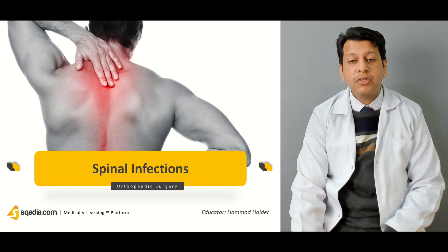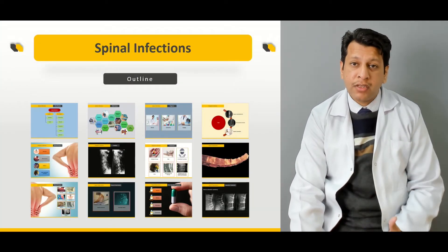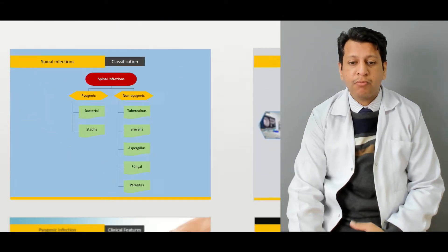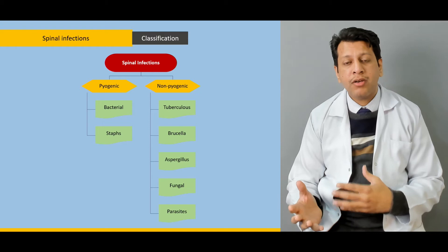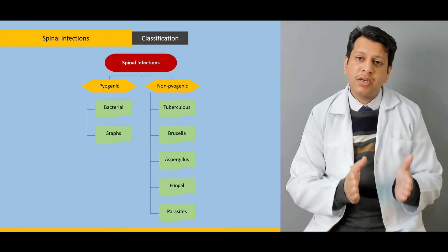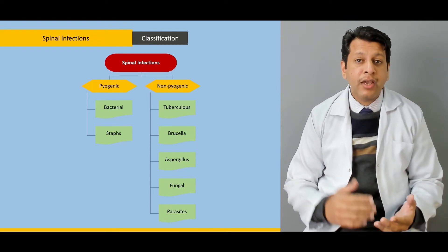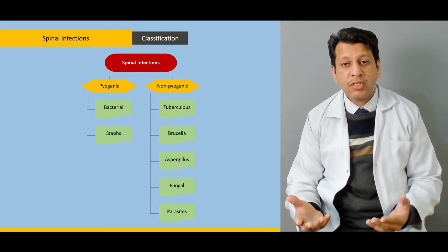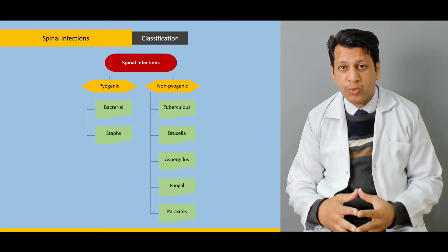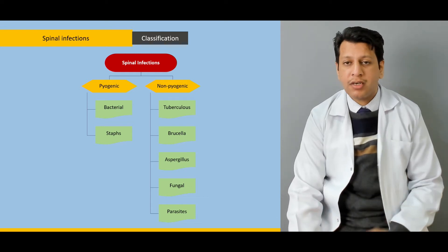We will be discussing mainly spinal infection, the different types, and how we broadly classify them into two types: pyogenic and non-pyogenic forms. We will discuss in detail the different organisms which cause pyogenic infection, the most common organism involved in non-pyogenic infection, and other less common organisms such as fungal and parasitic infections.